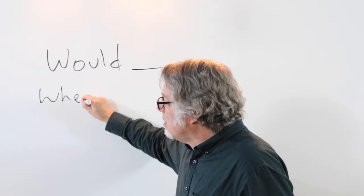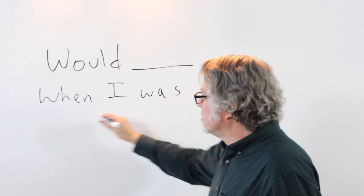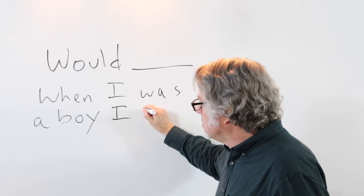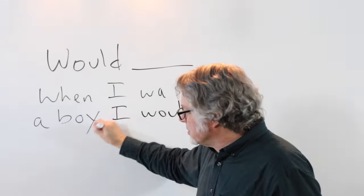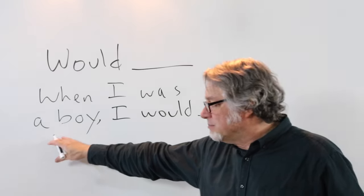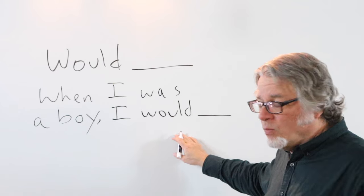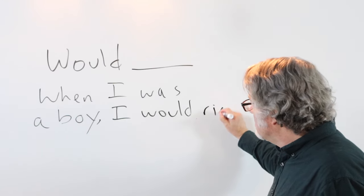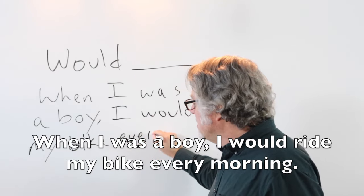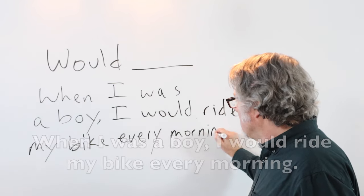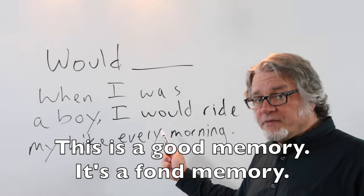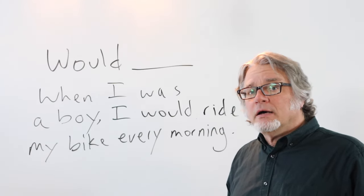As an example: 'When I was a boy,' — there's a comma here — 'I WOULD,' and then the main verb goes here, followed by more description. For example: 'When I was a boy, I would ride my bike every morning.' So, this is a good memory — a fond memory of something done a long time ago.